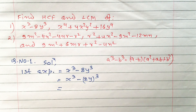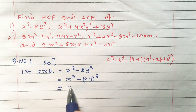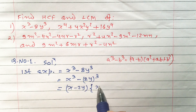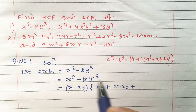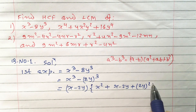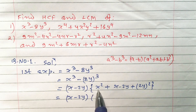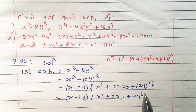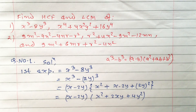So a minus b means x minus 2y. Another factor we can write as a square is x square plus ab which is x dot 2y plus b square which is 2y whole square. This equals x minus 2y times x square plus 2xy plus 4y square. These are the two factors. We cannot factorize further, so we leave here only. This is our first expression.